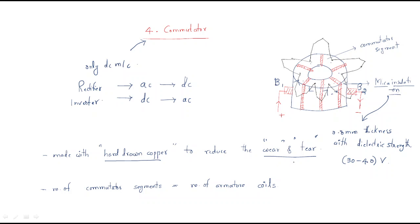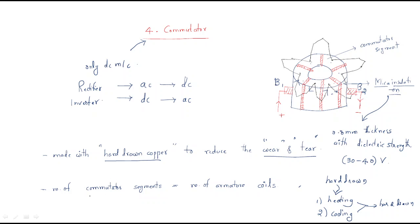The commutator is made with hard-drawn copper to reduce wear and tear. Hard-drawn means the material is first heated and then cooled, which makes it hard. It is specially designed as hard-drawn copper.